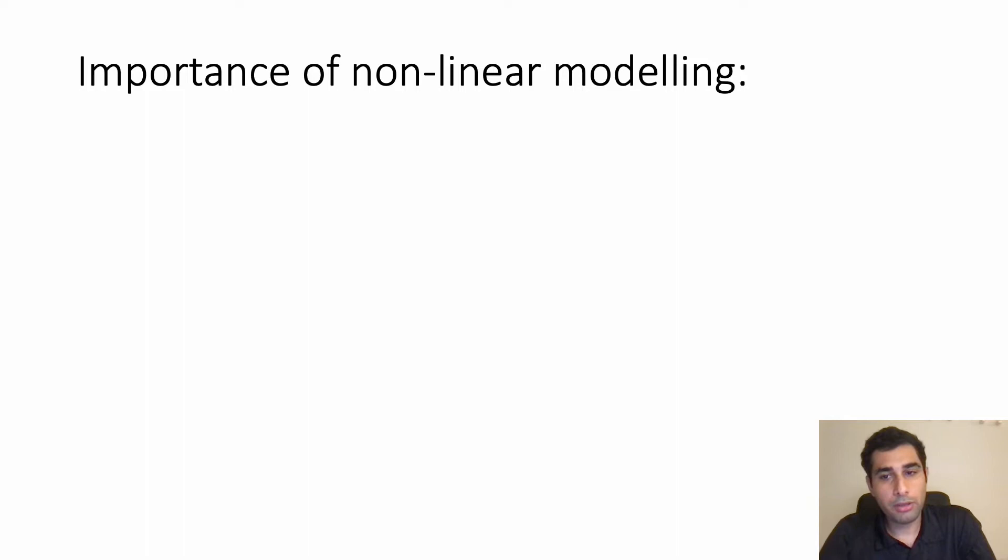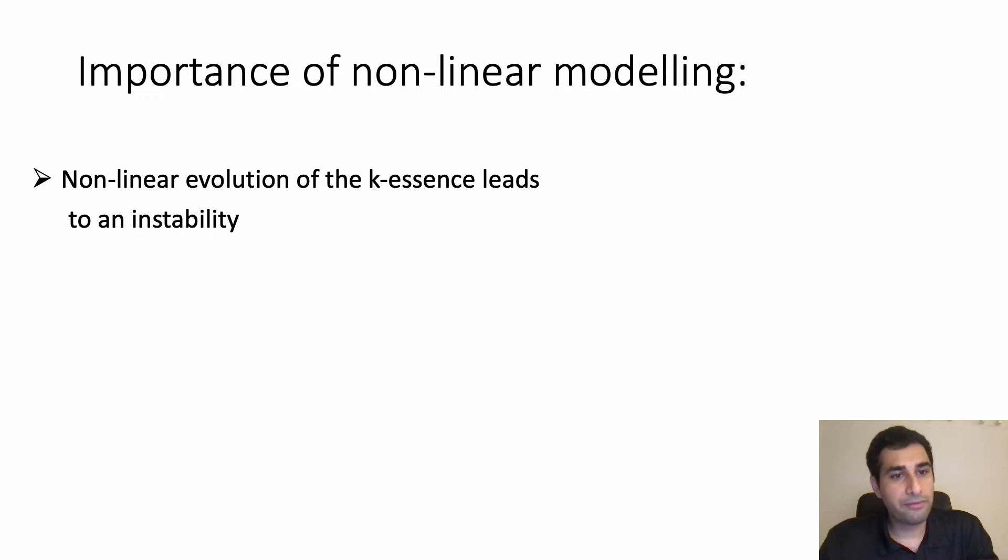I'm going to show that there is a more important reason to consider nonlinearities in these theories and that's the instabilities can arise through the nonlinear terms, through nonlinear corrections of these models. What I'm going to discuss specifically is that nonlinear evolution of the k-essence theory leads to an instability.